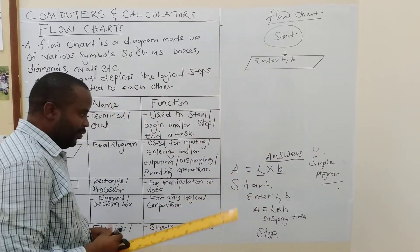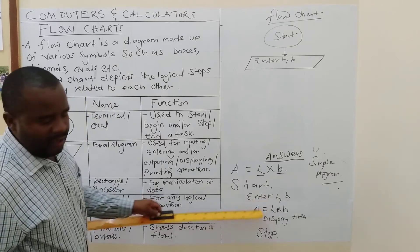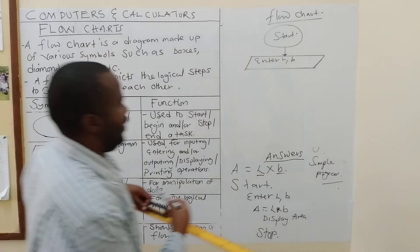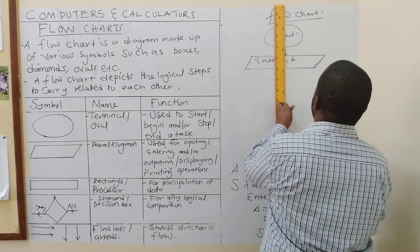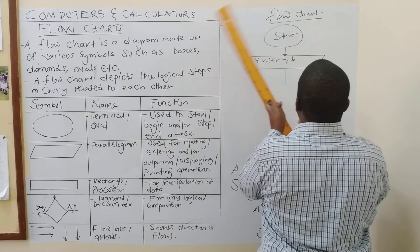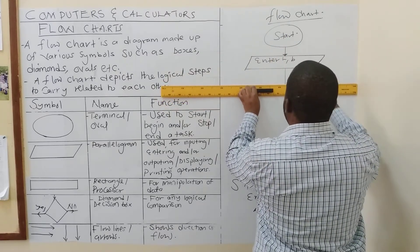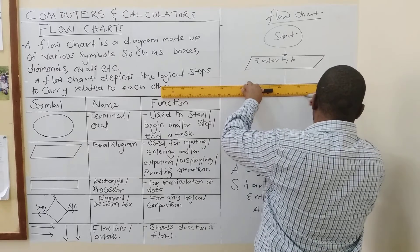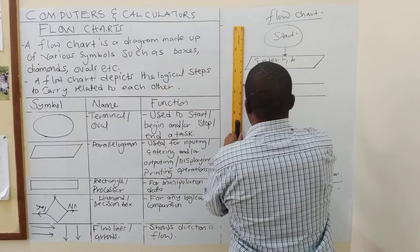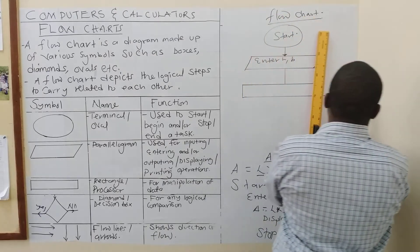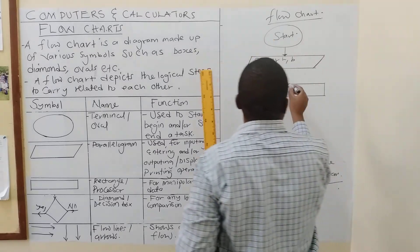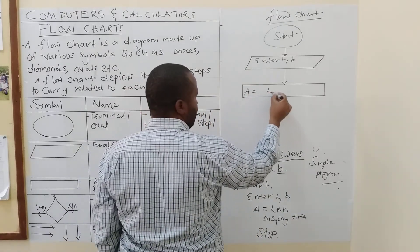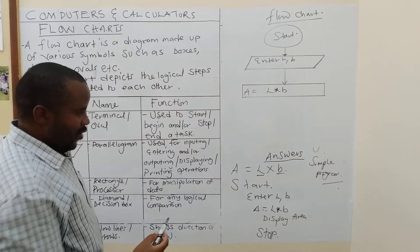So, there must be an arrow here. Then, what's the next step? We define how the area should be found. So, at this stage, you are processing the area. That should calculate. What are we going to use? We will use the rectangle or processor. So, here, there is need of an arrow. Then, we are going to say A is equal to L asterisk B.